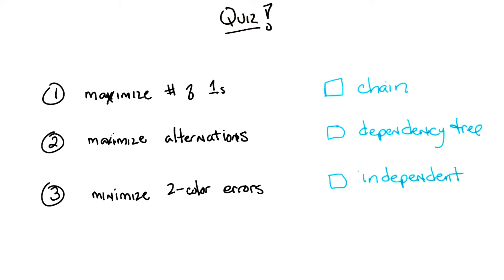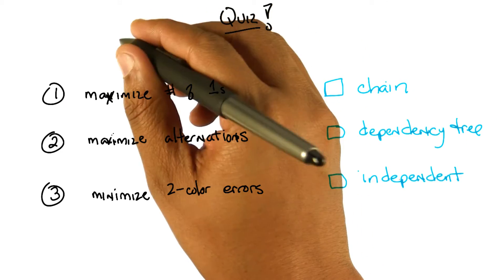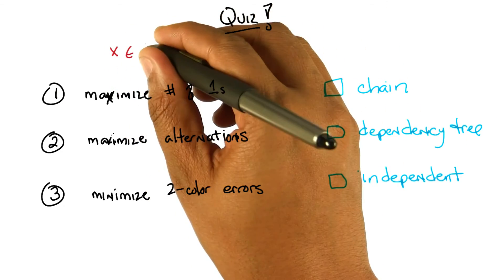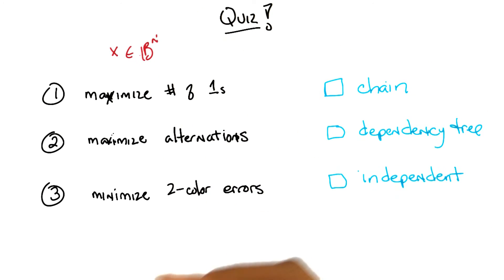Here are the three problems. The first problem: your fitness function is to maximize the number of ones. We're going to assume in all cases that our input values x are binary strings of length n — so strings of zeros and ones, like 0,0,1,0,1,1,1, whatever. We want to maximize the number of ones that appear in that string. That's going to be maximized by just making everything a 1, right? But we want to think about MIMIC finding that, because you don't know that's the true underlying fitness function.